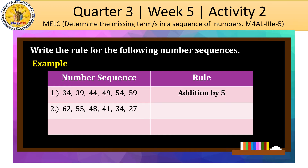For number 2, we have 62, 55, 48, 41, 34, and 27. The rule is subtraction by 7, because 62 minus 55 is equal to 7. So, 62 minus 7 is 55. 55 minus 7 is 48. 48 minus 7 is 41. 41 minus 7 is 34. And 34 minus 7 is equal to 27.